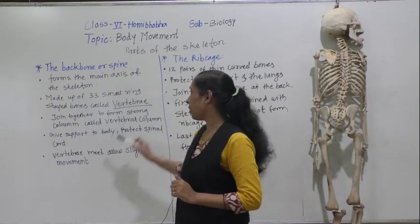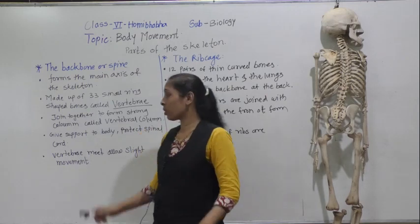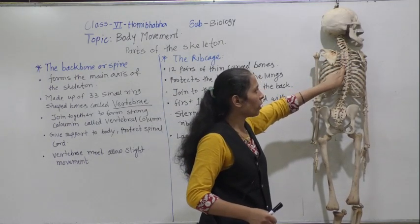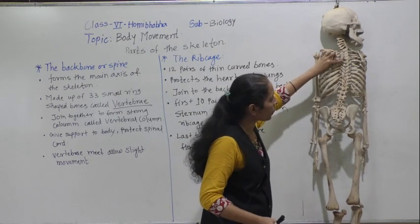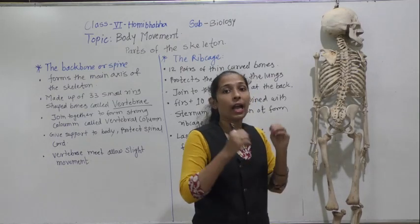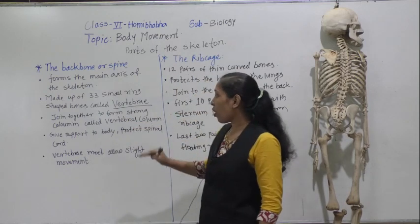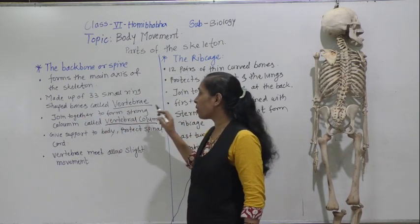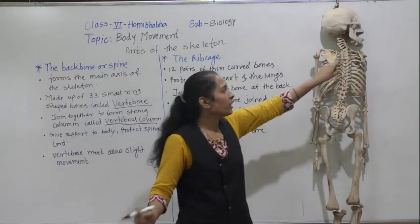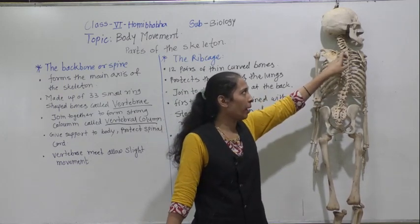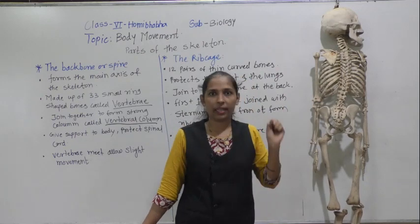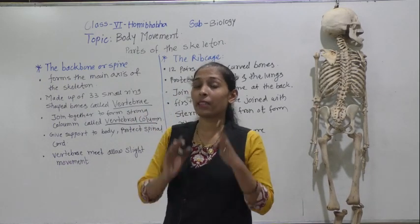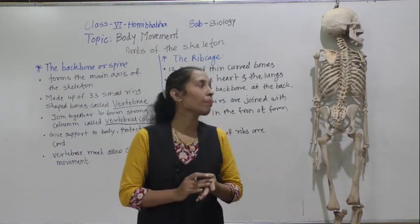Each small ring-shaped bone is called a vertebra. All these ring-shaped bones are connected and joined to each other, forming a very strong column called the vertebral column. The vertebral column plays a vital role in our skeletal system — it protects our delicate spinal cord.